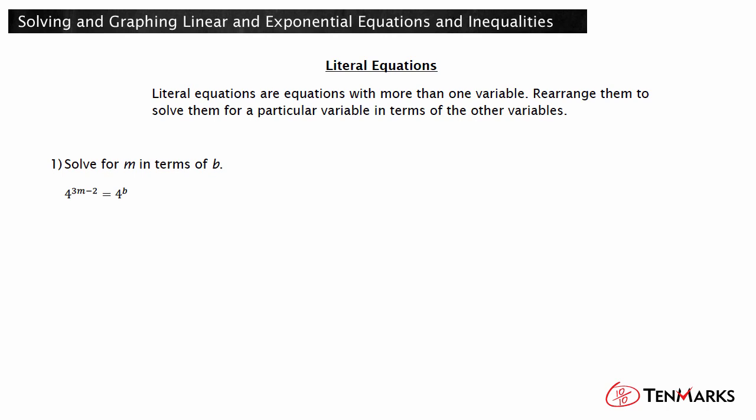4 to the 3m minus 2 power equals 4 to the b power. Both powers have the same base, so their exponents are equal. Now solve for m by using inverse operations. Add 2 and divide by 3. m equals b plus 2 all over 3.